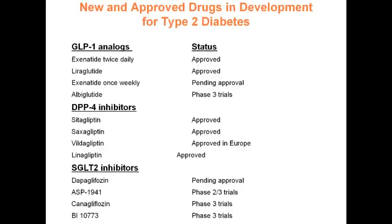The DPP-4 inhibitors inhibit the enzyme responsible for degrading GLP-1-like peptides. They are not associated with weight loss — they're weight neutral — but they are an oral medication. More recently, the SGLT-2 inhibitors have come along. The SGLT-2 molecule, the sodium glucose co-transporter in the kidney, is responsible for 90% of glucose reabsorption in the body, so by inhibiting it you can excrete a lot more glucose through the kidney.